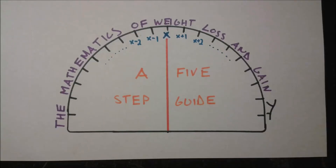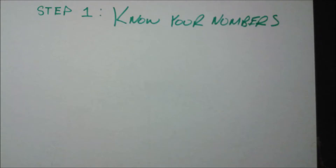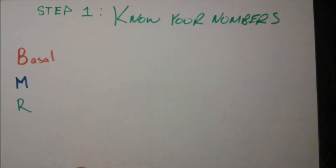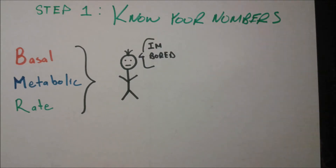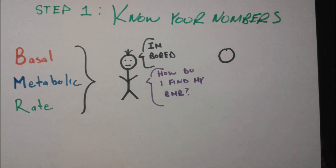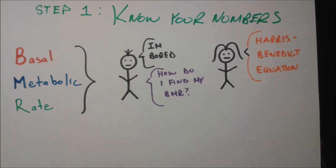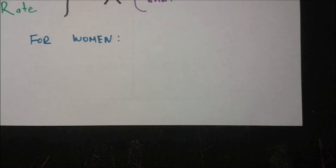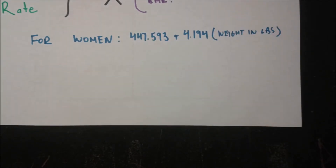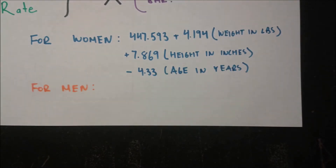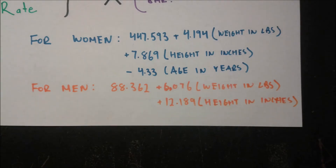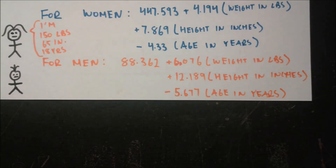The mathematics of weight loss and gain: a five-step guide. Step one: know your numbers. The first concept is BMR, basal metabolic rate — how many calories you'd burn if you were just standing there doing nothing all day, not even your daily activities. To find your BMR, you use the Harris-Benedict equation. For women, it's a constant plus constants times weight, height, and minus a constant times age. For men, it's a similar form with different constants.